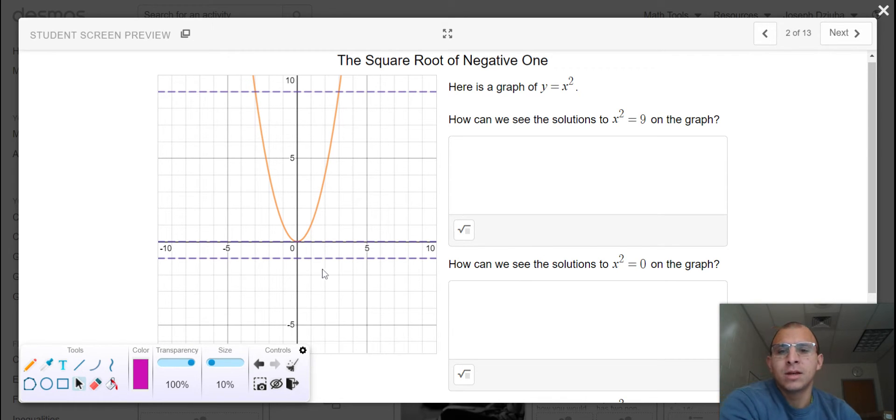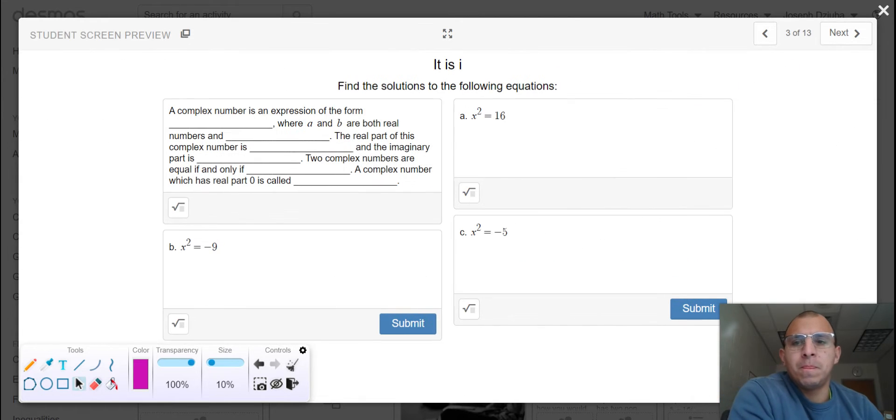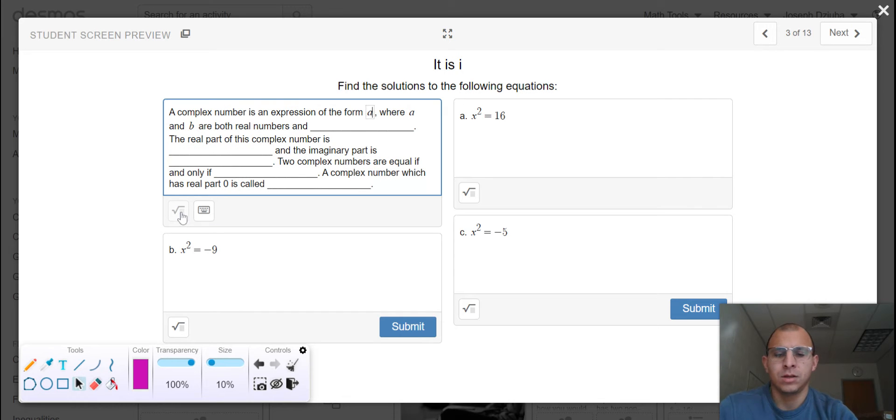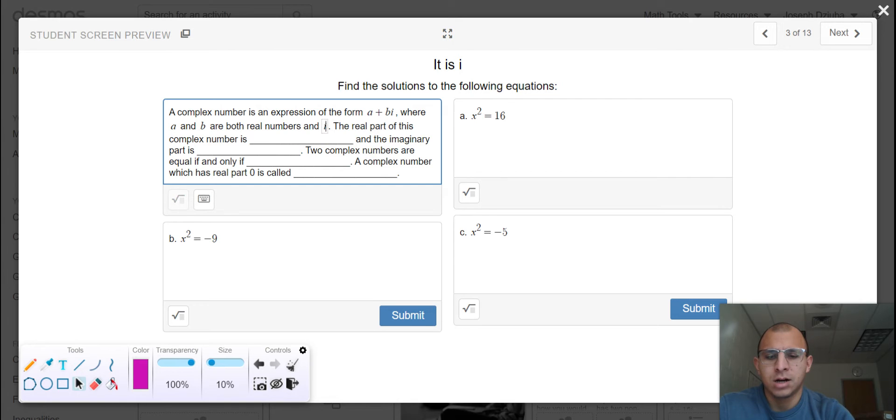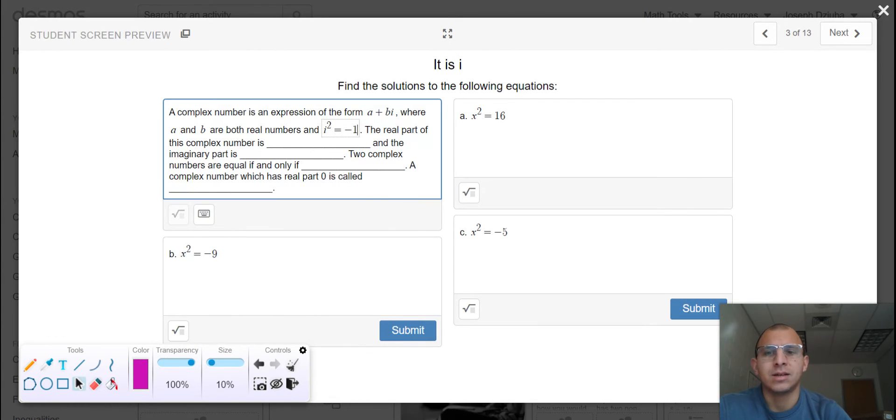All right, let's define what an imaginary number actually is. So a complex number is an expression of the form a plus bi, where a and b are both real numbers like 2, 3, negative 6, negative 8, negative 10. And i to the second power is equal to negative 1.